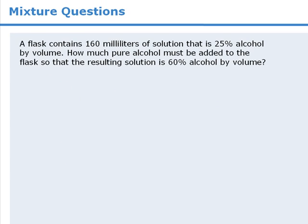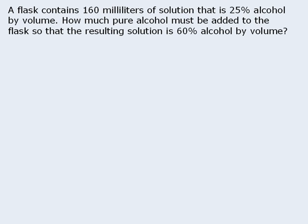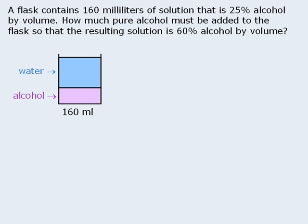Let's try another question. Here we have a 25% alcohol solution, and we want to determine how many mL of pure alcohol must be added to the solution so that the resulting solution is 60% alcohol by volume. Let's begin by sketching the initial solution with the water and alcohol separated. The initial solution is 25% alcohol by volume. If there is 160 mL of solution and 25% of 160 is 40, then we know that there is 40 mL of alcohol in the solution. This means the remaining 120 mL must be water.